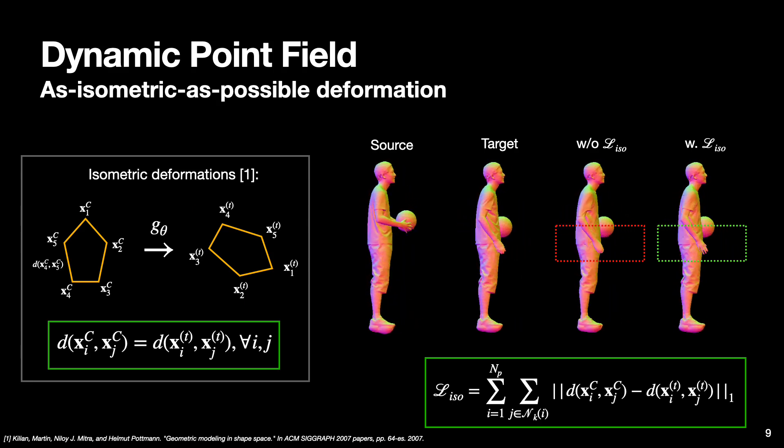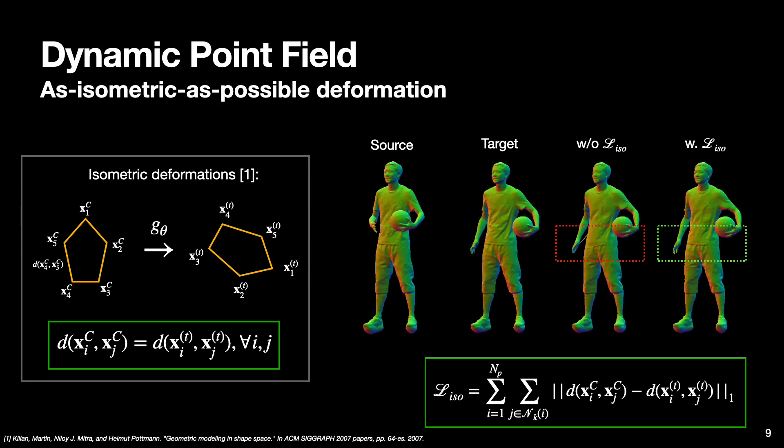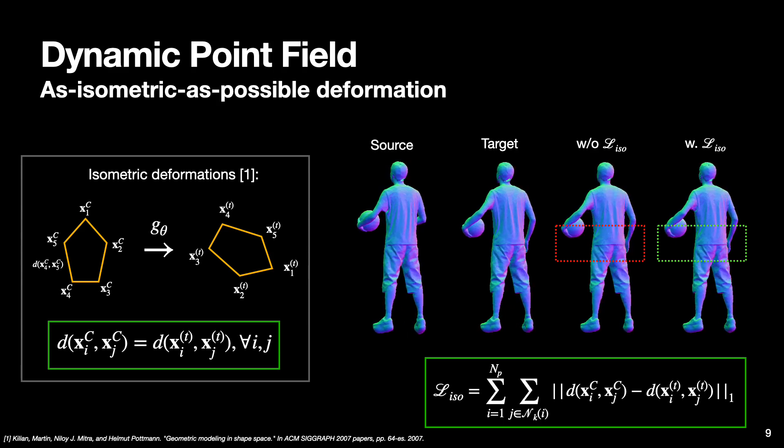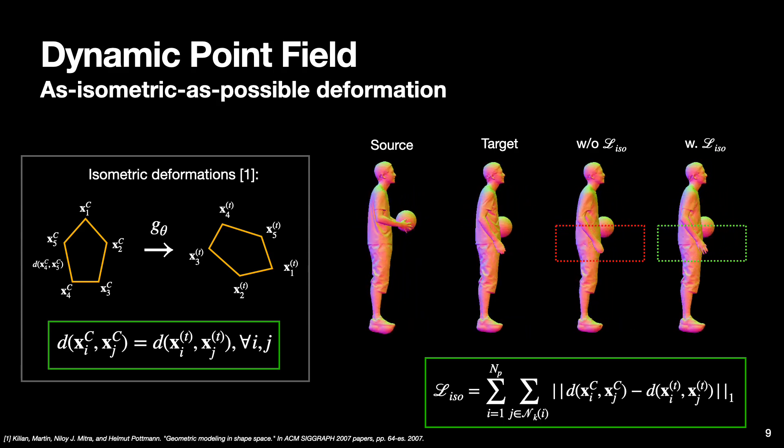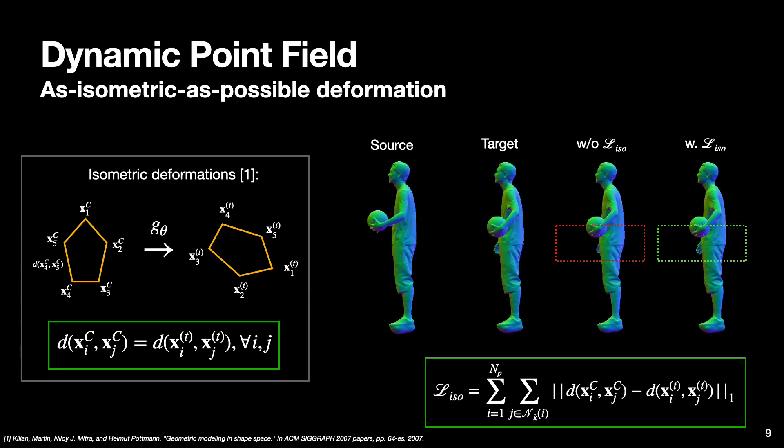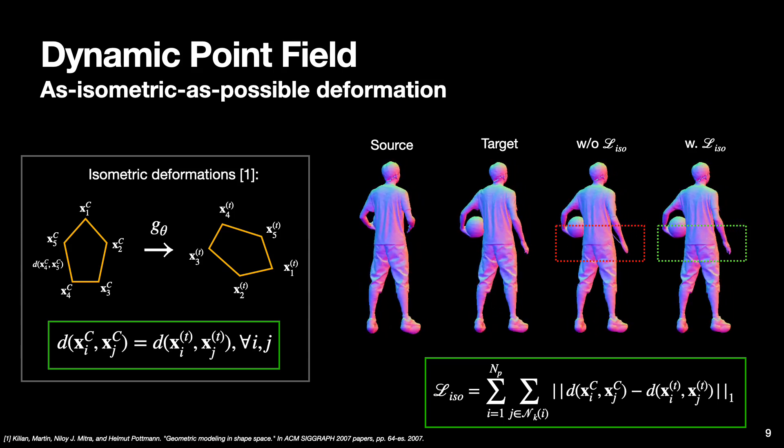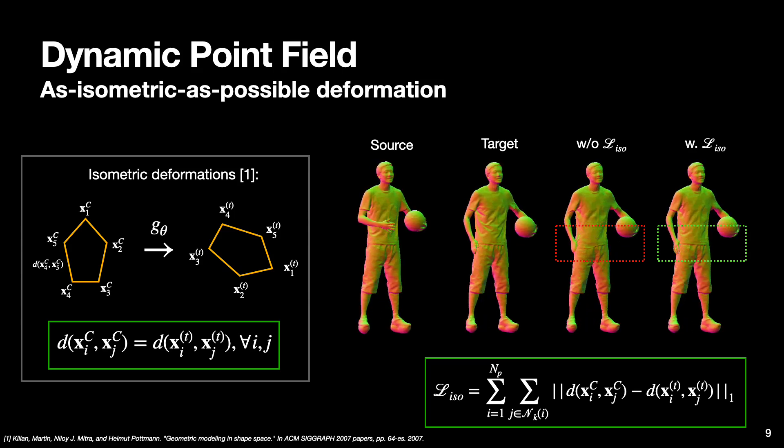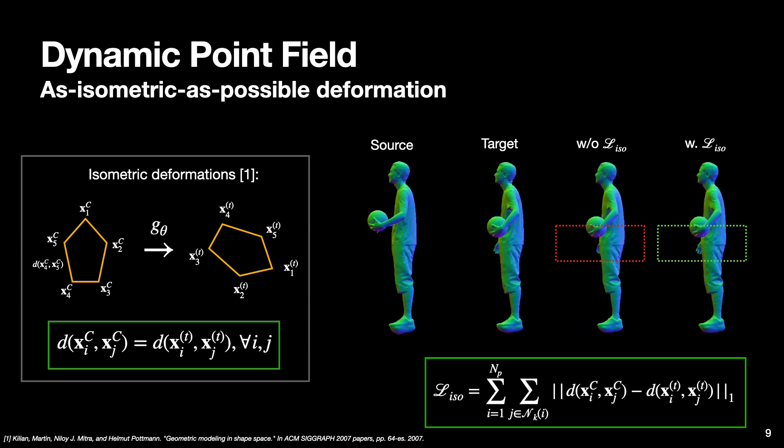First, our explicit 3D surface formulation allows us to use some classical constraints for learning deformations in 3D space. In this work we use the as-isometric-as-possible constraint to guide our learning, which enforces the preservation of distances between points in the canonical and deformed space.